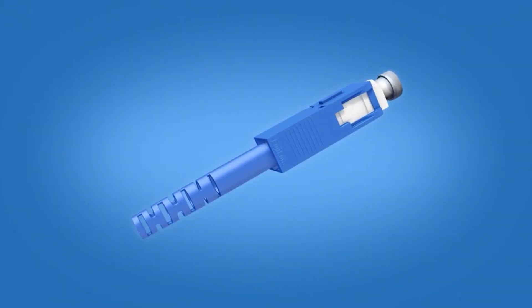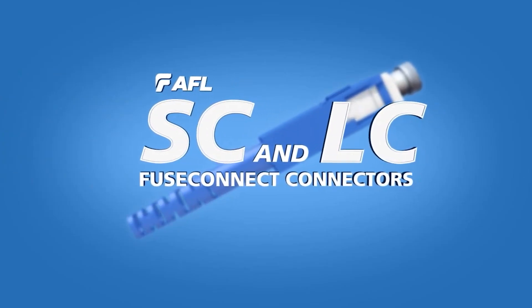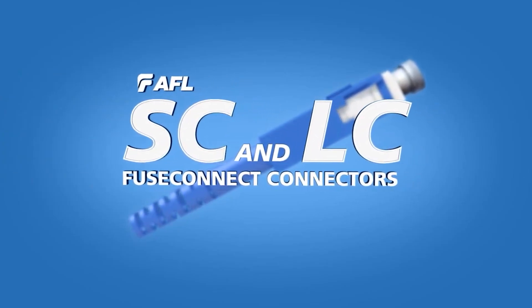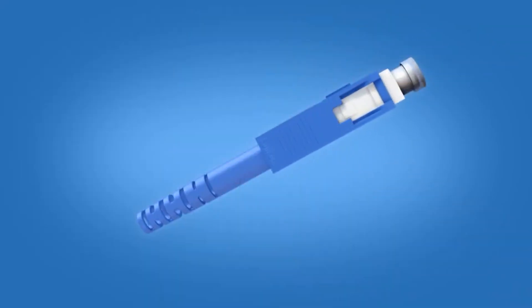This installation video is applicable for AFL splice-on SC and LC fuse connect connectors on 2 and 3 mm diameter simplex cable. These step-by-step instructions demonstrate the termination of a 3 mm SC fuse connect connector using a Fujikura 70S fusion splicer.